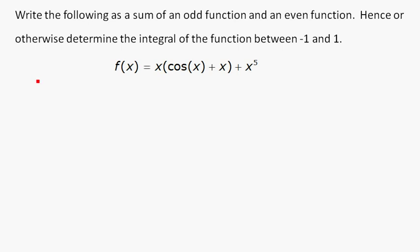First things first, if we expand out the brackets we get that f of x is equal to x cos x plus x squared plus x to the 5. So what do we have which of these is even? Well I know that x squared is even because it's an even power of x.